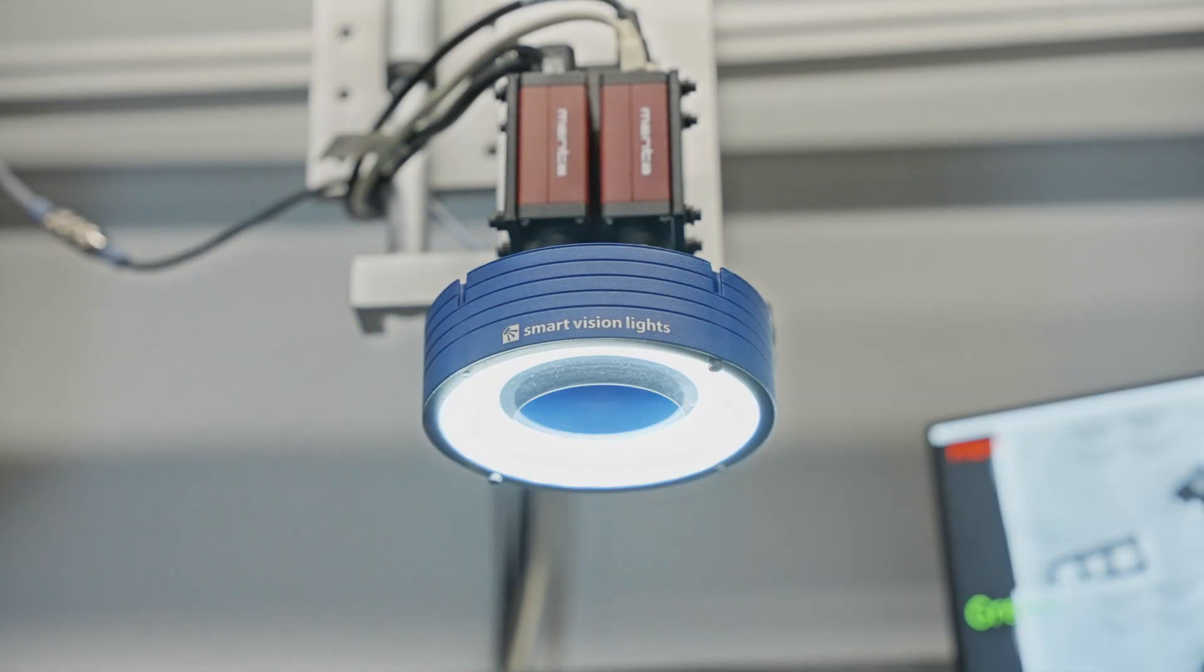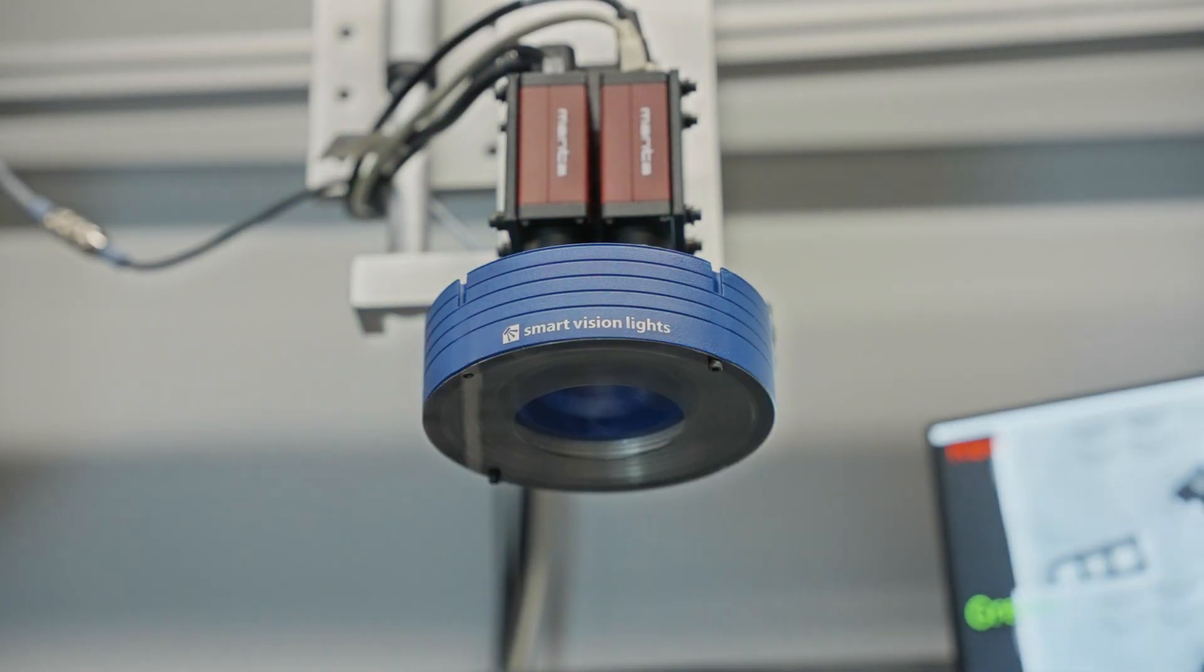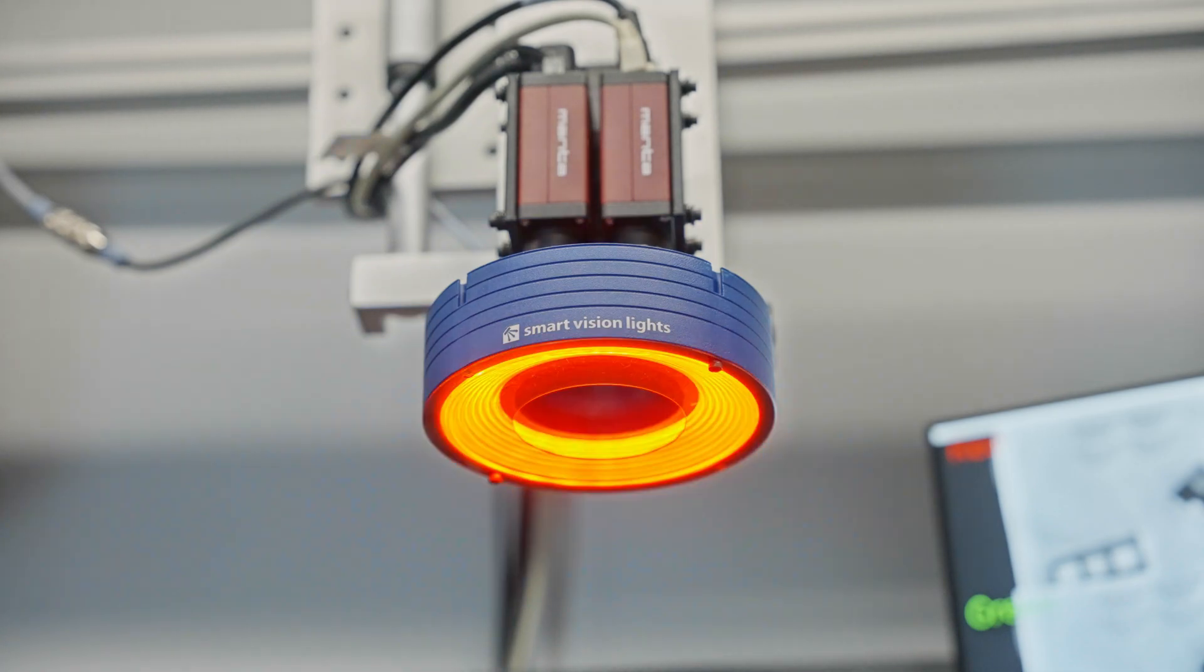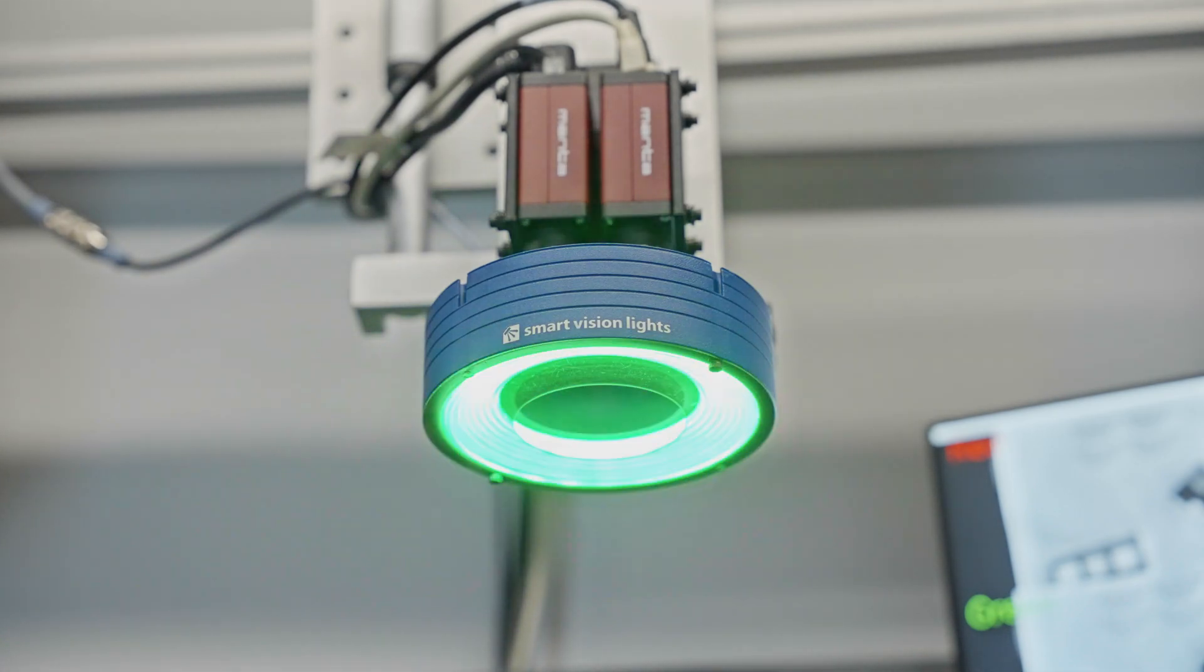In this demonstration, you can see this process is working. The Smart Vision Lights RMX 140 RGBW ring light is being cycled through red, green, then blue, with an image being captured at each stage.